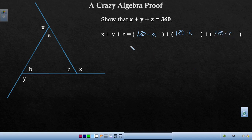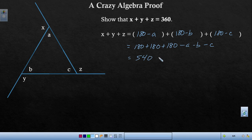So I'm going to remove these parentheses. I've got 180 plus 180 plus 180 minus a minus b minus c. 180 plus 180 plus 180 is 540 minus. Now I'm going to factor a minus one out of each of these. That leaves me with a plus b plus c.